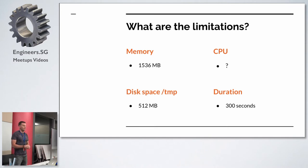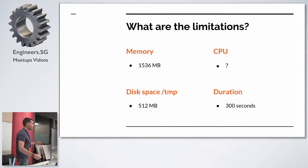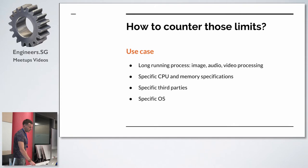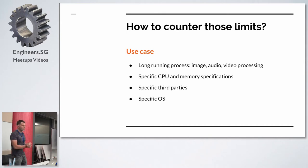The duration limit is five minutes. For some processes five minutes is still long, but it could be short, especially if you are processing video. You may have some issues until AWS increases all those specifications. But for now, that's the current boundary. It's maybe not suitable for long-running processes such as image, audio, or video. Maybe you need specific CPU and memory.